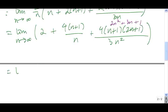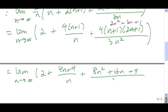So we have the limit, and we're almost done. The limit as n goes to infinity of 2 plus 4n plus 4 divided by n plus 4 times this trinomial here. So we get 8n squared plus 12n plus 4 divided by 3n squared.